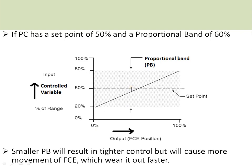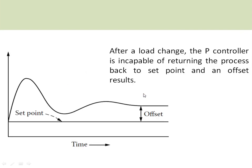A narrower proportional band results in tighter control of the process variable, but introduces more oscillations, which may not be acceptable for certain applications. A wider proportional band results in poorer control but eliminates oscillations. The proportional band is selected depending on your process requirement. One major disadvantage of using only a proportional controller is that the process will not reach the set point — there is an offset, also known as steady-state error. As time tends to infinity, the process variable never reaches the set point.